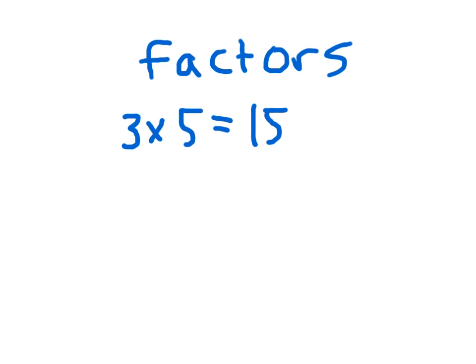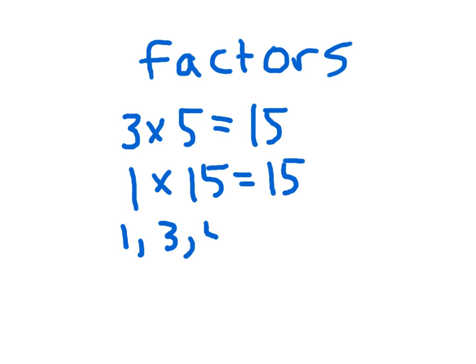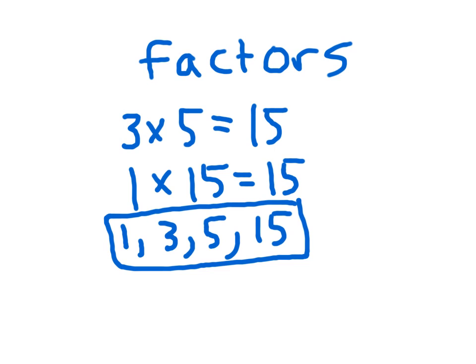If we've got 3 times 5 equaling 15, are there other facts that we can come up with that equal 15? If we can find the factors of 15, 1 times 15 is also equal to 15. So we've got the numbers 1, 3, 5, and 15 as our factors of 15.